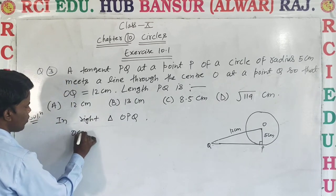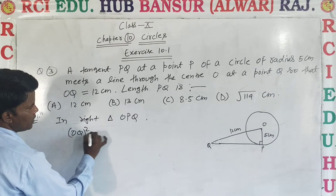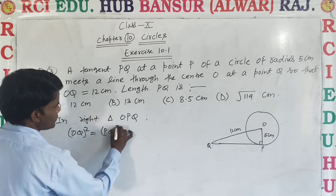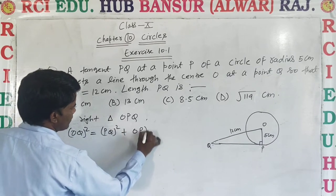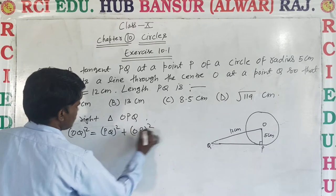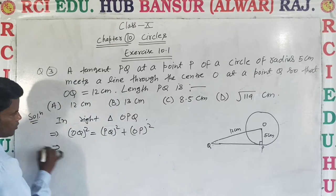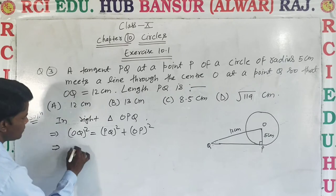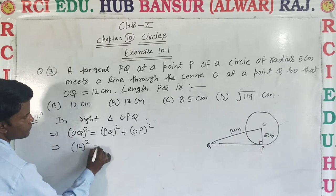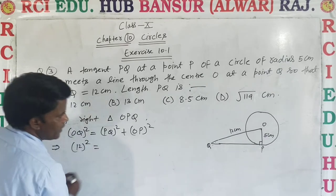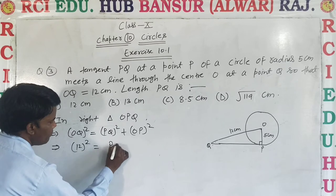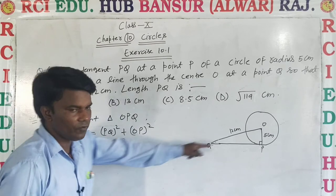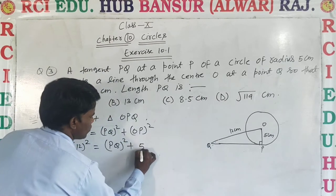By using Pythagoras theorem: OQ² = PQ² + OP². Putting in the values: OQ is 12, so 12² equals PQ² plus OP is 5, so plus 5².